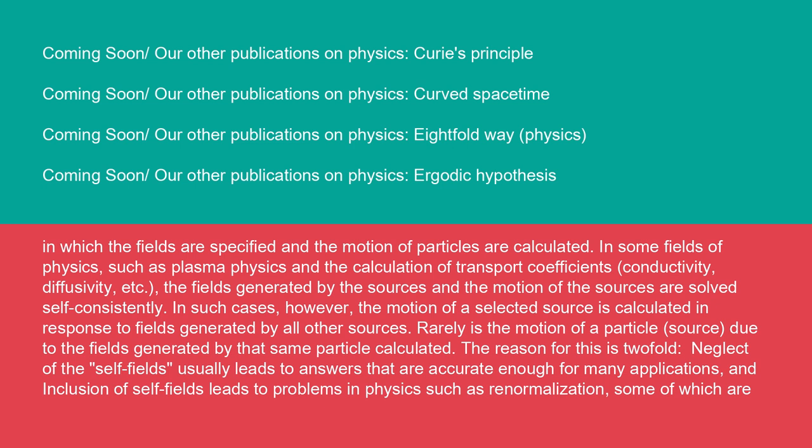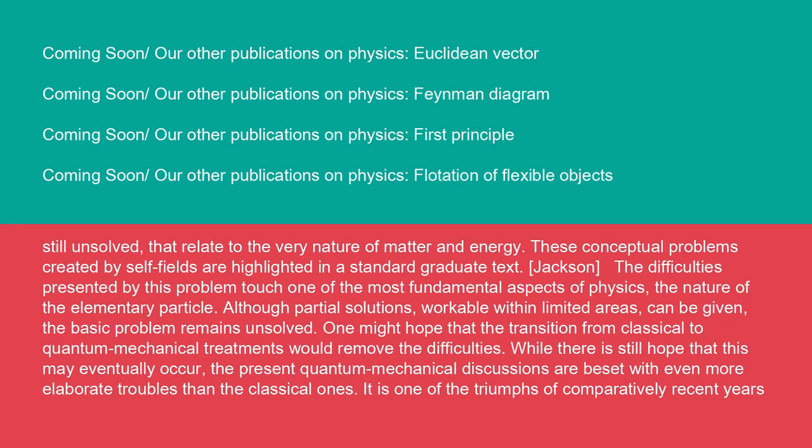In such cases, however, the motion of a selected source is calculated in response to fields generated by all other sources. Rarely is the motion of a particle source due to the fields generated by that same particle calculated. The reason for this is twofold. Neglect of the self-fields usually leads to answers that are accurate enough for many applications. An inclusion of self-fields leads to problems in physics such as renormalization, some of which are still unsolved, that relate to the very nature of matter and energy.